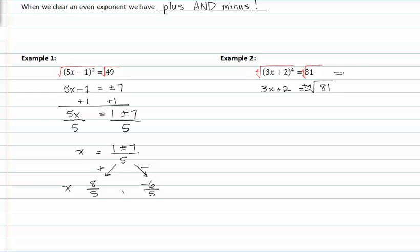We know that eighty-one is the same as three to the fourth. So we can rewrite this as three x plus two is equal to plus or minus three.